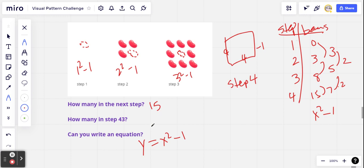And then to figure out the number of jelly beans in step 43, we'll just plug in 43 for x in our equation. So y equals 43 squared minus one. That's 1849 minus one. That's 1848. So 1848 jelly beans in step 43.